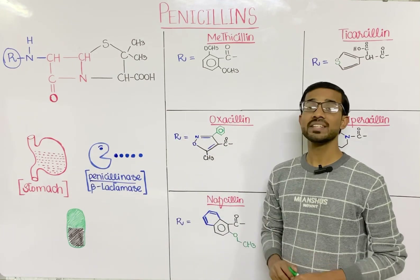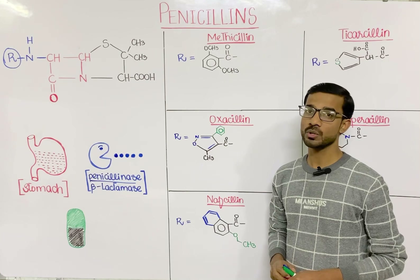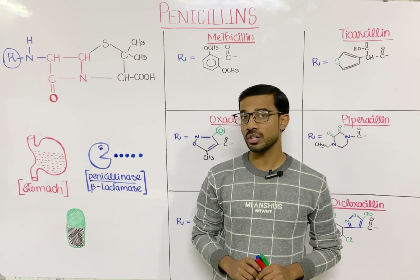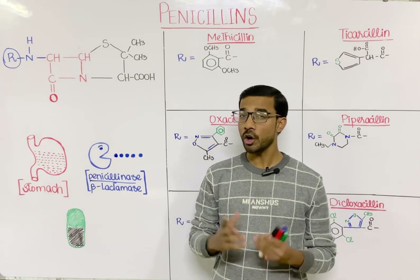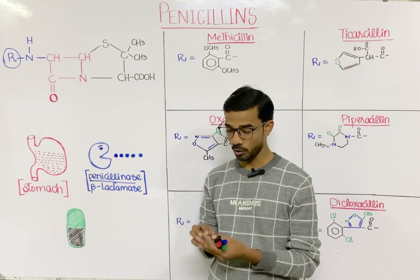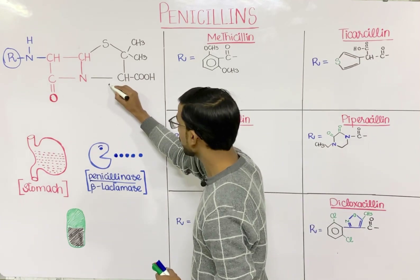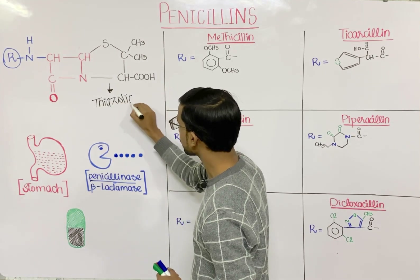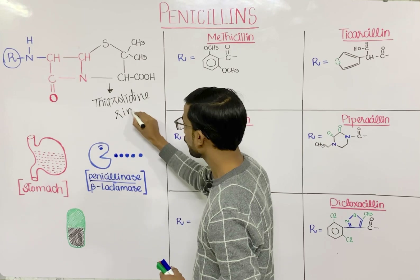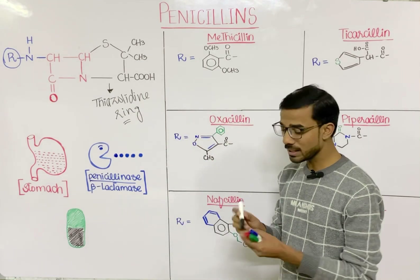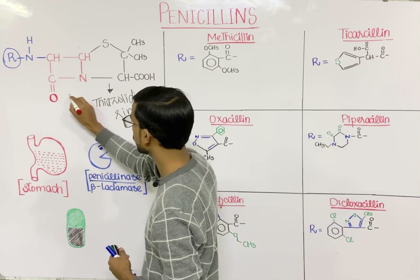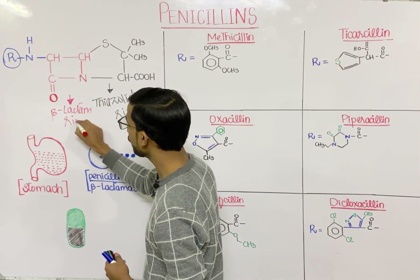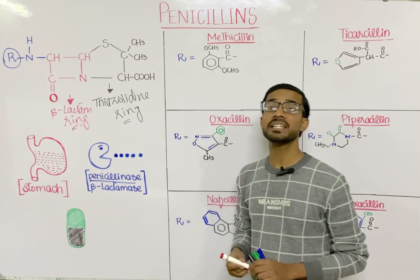First, we will see the general structure of the penicillin. There are four most important components in the structure. The first component is the thiazolidine ring — that's the most important. The second component is the beta-lactam ring, and because of this we call penicillin a beta-lactam drug.